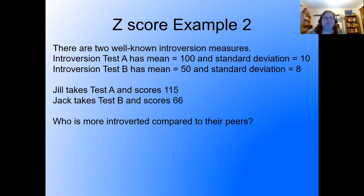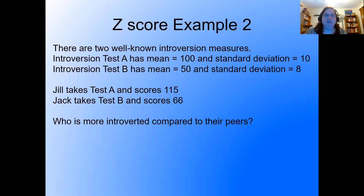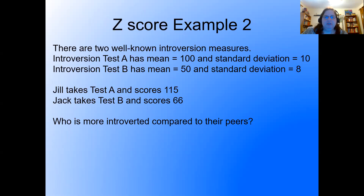Here's one to try. There are two well-known introversion measures. Introversion test A has a mean of 100 and a standard deviation of 10. Introversion test B has a mean of 50 and a standard deviation of 8. Jill takes test A and scores 115; Jack takes test B and scores 66. Who is more introverted compared to their peers? Take a moment, pause the video, and see if you can work it out.